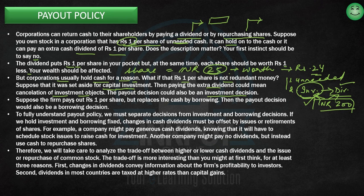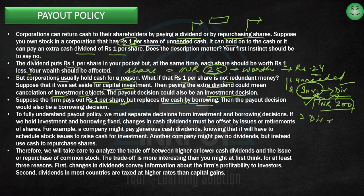There is another view. Suppose the firm pays out one rupee per share but replaces the cash by borrowing. Then I'm not actually paying out a dividend — I'm borrowing money. The moment I pay out the dividend and replace it through borrowing, it's not a payout decision anymore; it's a borrowing decision.